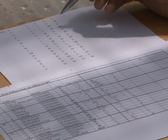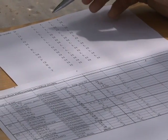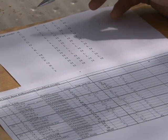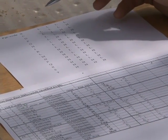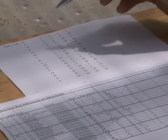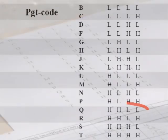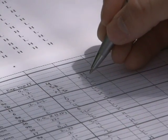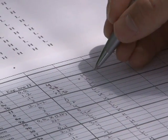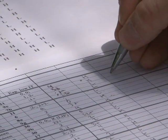We can go to this code, which we call the PGT code for the stem rust code, and see what letter the pattern corresponds to. For the pattern high, high, low, low, that corresponds to the letter Q. So for the first four differentials, the infection type pattern is a Q.